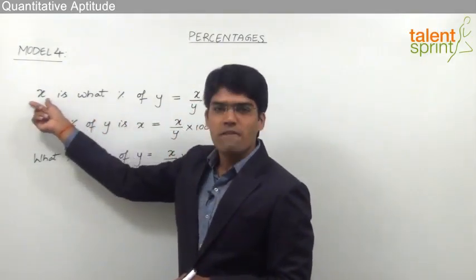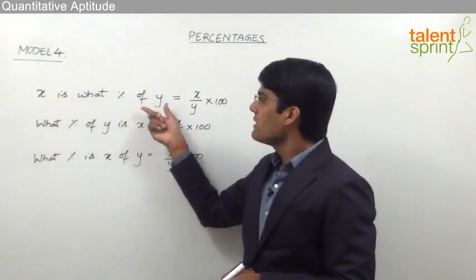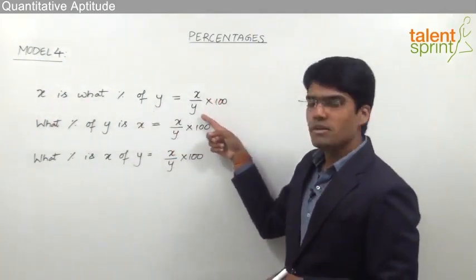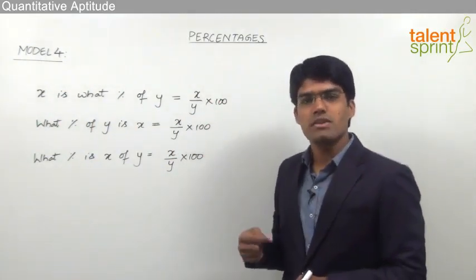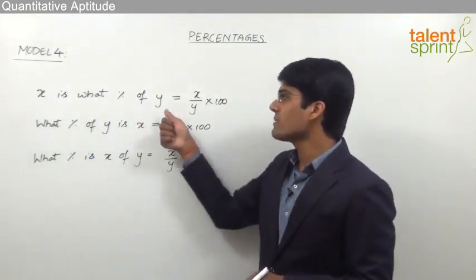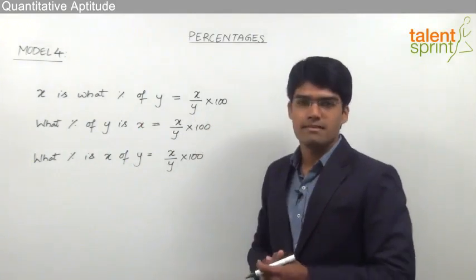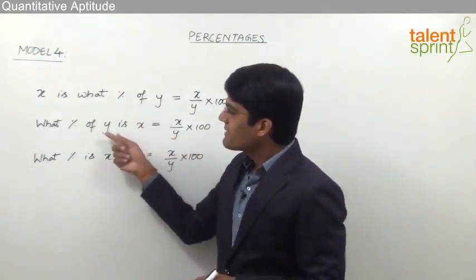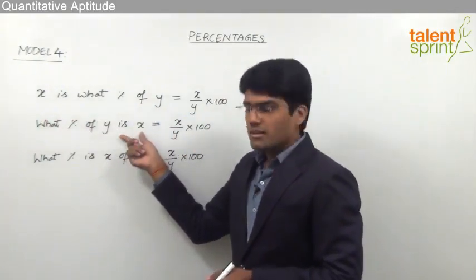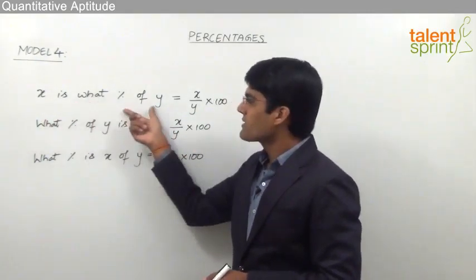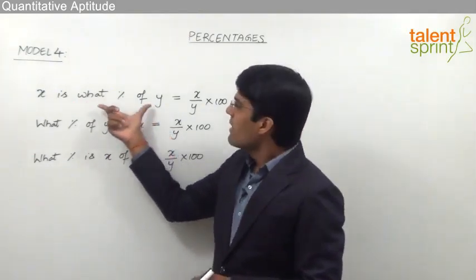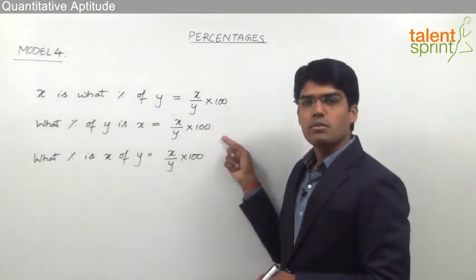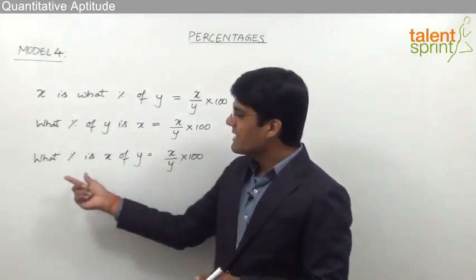Similarly, if the question says the number of students who have passed is what percent of the total number of students, we can take it as number of students passed divided by total number of students into 100. The other way of asking the same question is: what percent of y is x? This is as good as x is what percent of y, and the answer again remains x by y into 100.